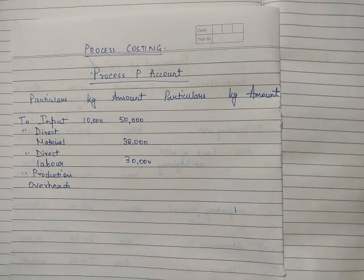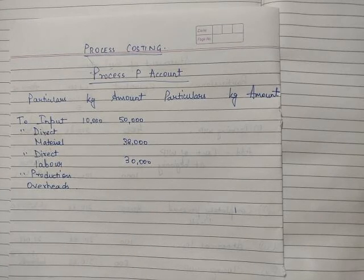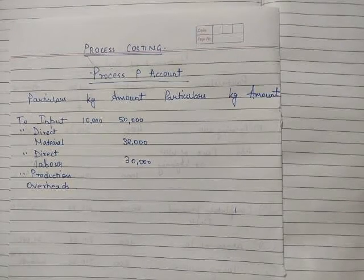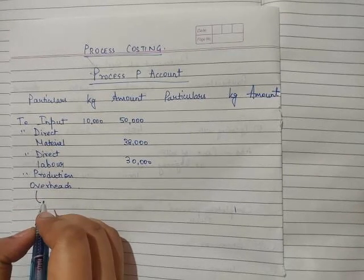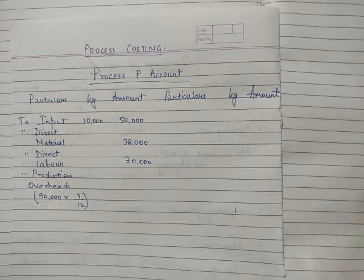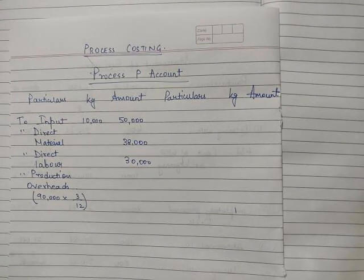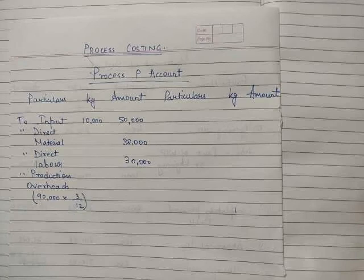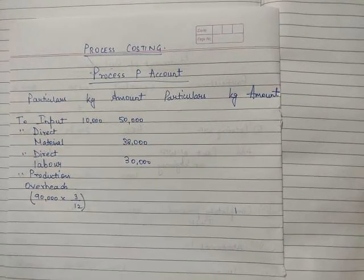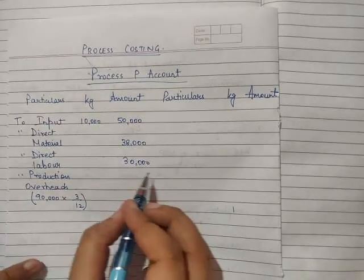Production overheads are absorbed as a percentage of direct labour. The three processes are in the ratio of 3:4:5, which is the ratio of the direct labour cost. So the production overhead to be absorbed by process P is 90,000 into 3 by 12. The total is 30,000 plus 40,000 plus 50,000 which gives us 1,20,000, and we absorb in the ratio of 3 to 12, giving us 90,000 × 3/12 = 22,500.